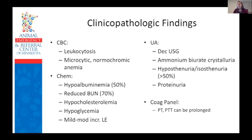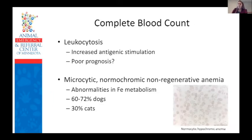Blood work is the first step in diagnostic workup of animals suspected to have an extrahepatic portosystemic shunt. CBC, chem panel, UA, and coag panel should be performed. On the complete blood count, the most common findings are leukocytosis and microcytic normochromic non-regenerative anemia. Leukocytosis has been suggested to be due to increased antigenic stimulation from decreased hepatic endotoxin and bacterial clearance from portal circulation. In some past studies it was associated with poor prognosis, but this has been contradicted in recent literature.